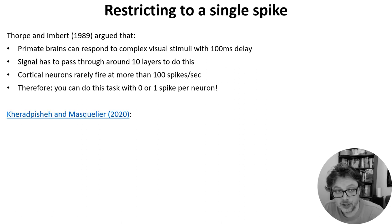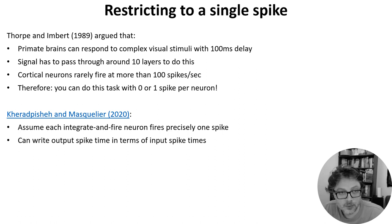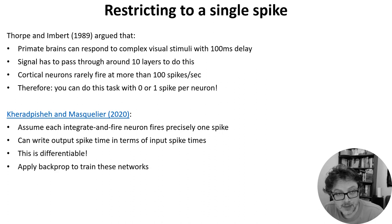Tim Masquelier and colleagues implemented this idea. They set up a network of integrate and fire neurons and only allowed them to fire one spike per stimulus presented. With that limitation in place they could write the output spike time of a neuron analytically in terms of the input spike times and weights. And this function is differentiable and that means that we can apply backprop to train these networks.